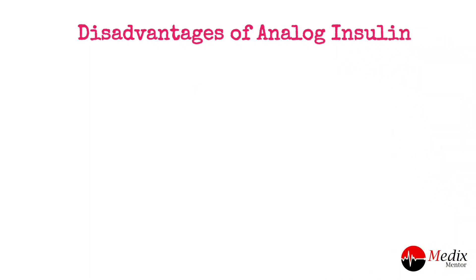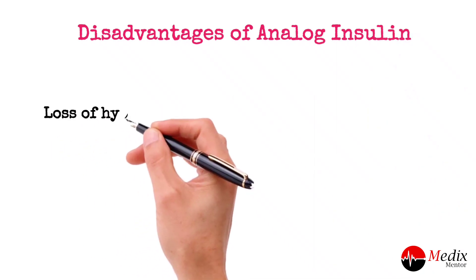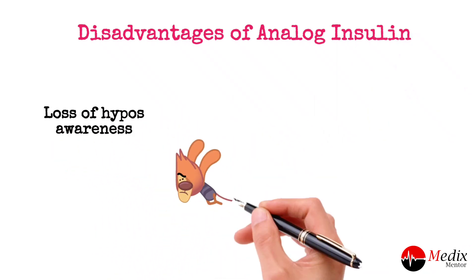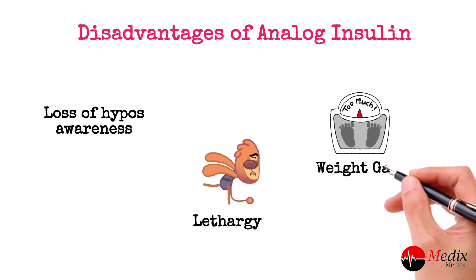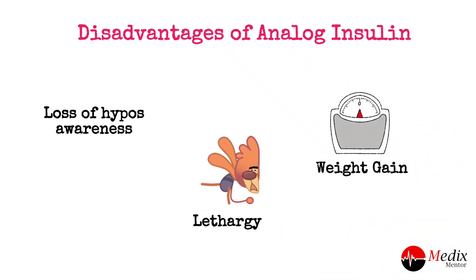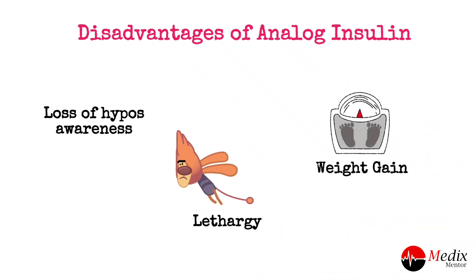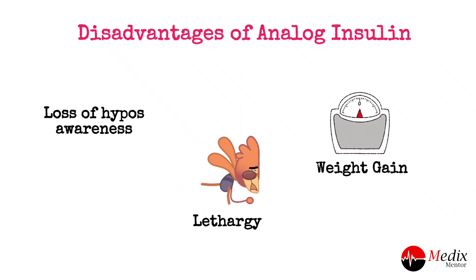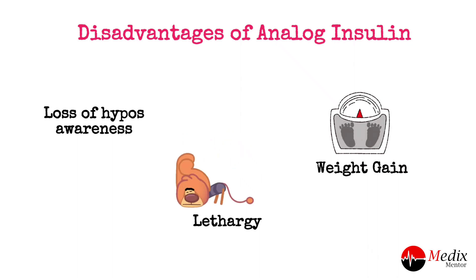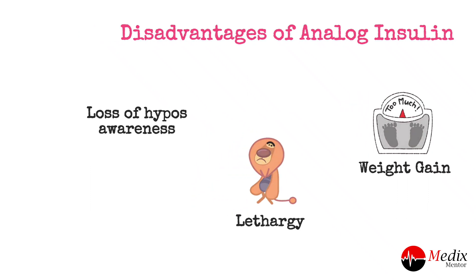There are also a few disadvantages of analog insulins. As with human insulin, it has been reported that analog insulins may lead to unwanted side effects such as loss of hypo awareness, lethargy, and weight gain — effects that might not be found when taking animal insulins. That was the complete video about analog insulins, including their advantages and disadvantages.